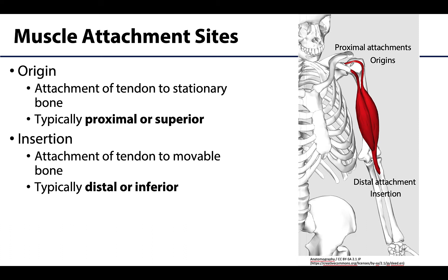With the more traditional terminology, the immovable attachment site is referred to as the origin — the part or site that will be stationary. These tend to be more proximally or superiorly placed. Whereas that movable attachment site is referred to as an insertion, and these tend to be distal or inferior.